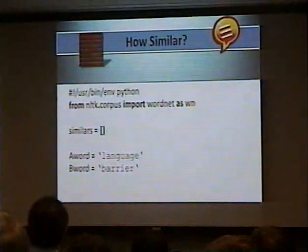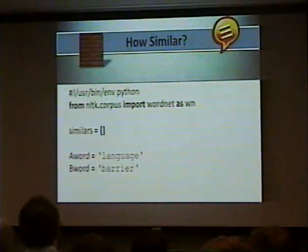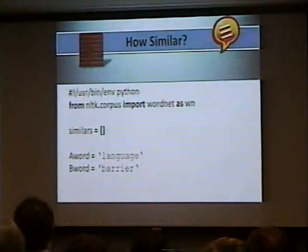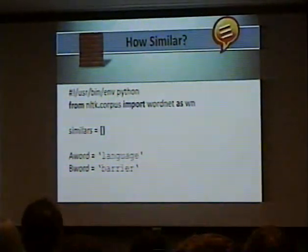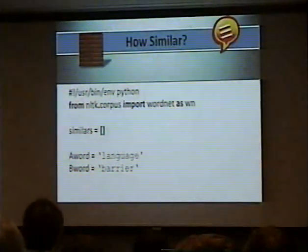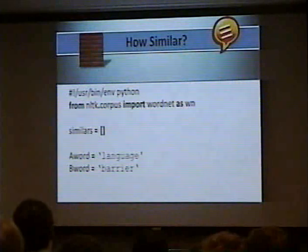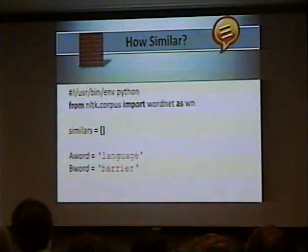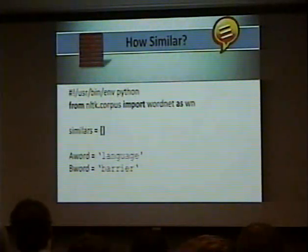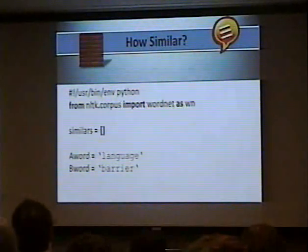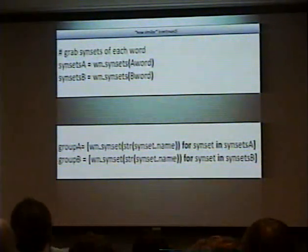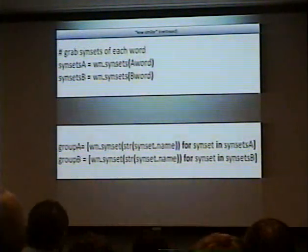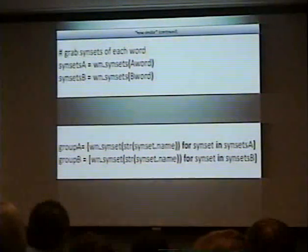How similar are objects? Going back to the earlier example — we can calculate how similar two things are. From here we're going to utilize the WordNet corpus and import it. We give it word A and word B — two different words that don't really have any relationship defined yet. We also create a list called 'similars' to house all the words that are similar to each other. The first word is 'language' and the second is 'barrier'. We get the synsets of each word, giving us two list objects each containing the synsets for each word.